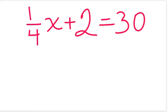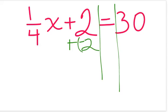Here's another equation. We have 1/4x plus 2 equals 30. So again, we're going to solve it as we would any two-step equation. We start by adding a negative 2 to each side of the equation.